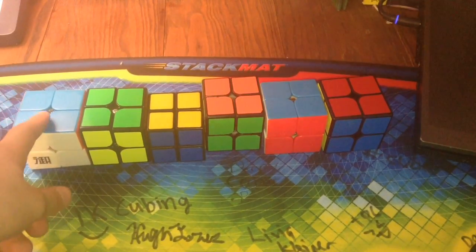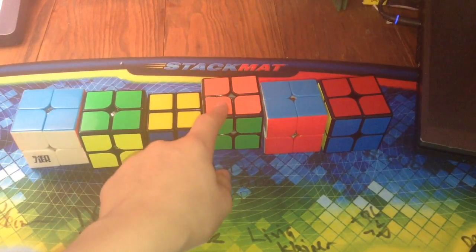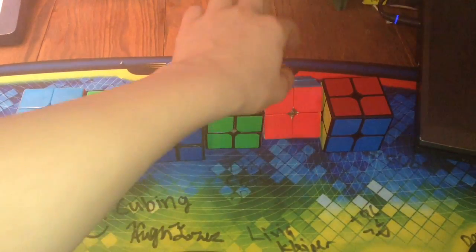So I have the Kung Fu Yuehun, the Dayan 2x2, the Rubik's 2x2, the Weipo, the Lingpo, and the Yuxin White 2x2.